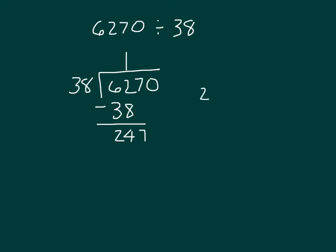Thinking of this here, of our estimate, remember we were talking about 40. What number is close to 247 without going over? It would be 240 divided by 40 equaling 6. So let's try 6. And remember, put that into our tens place because we're really dividing 247 tens.